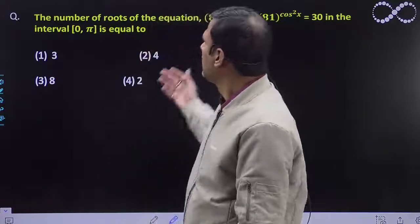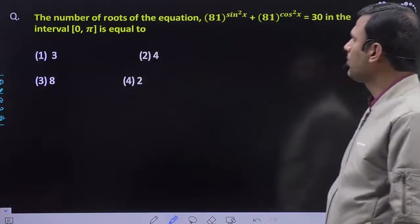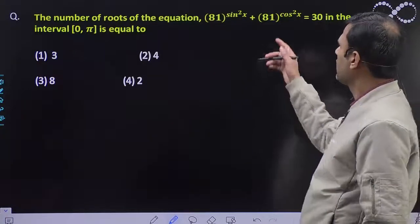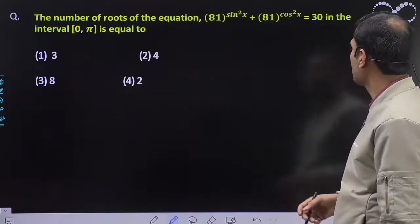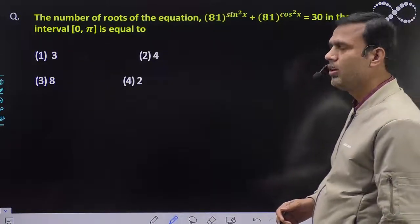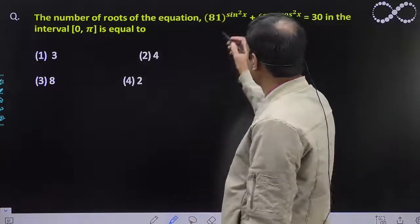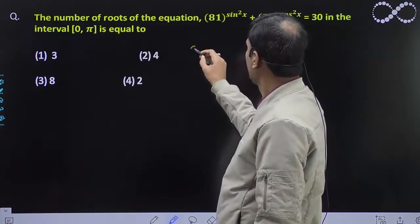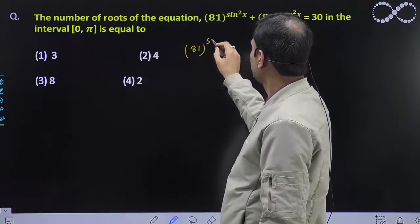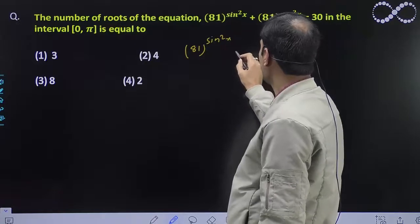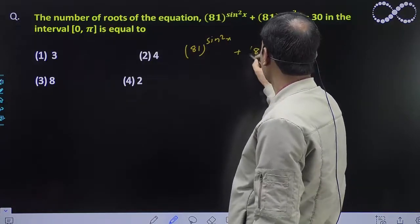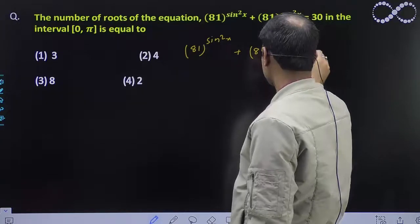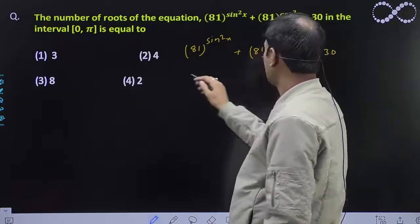Hello students. This question is the number of roots of the equation 81 to the power sin²x plus 81 to the power cos²x equal to 30 in the interval 0 to pi. So, 81 to the power sin²x plus 81 to the power (1 minus sin²x) equal to 30.